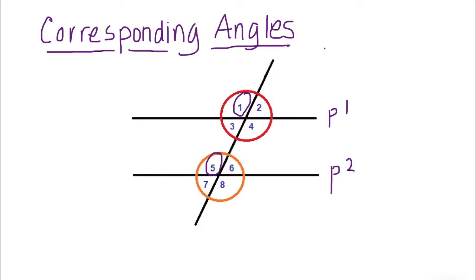So angle 1 and angle 5 are corresponding angles. Likewise, 2 and 6 are corresponding, 3 and 7 are corresponding, and 4 and 8 are corresponding angles.